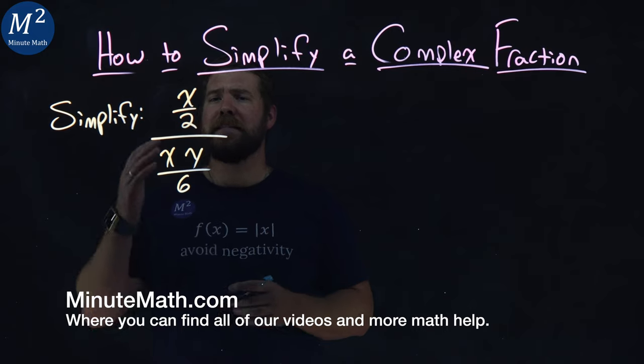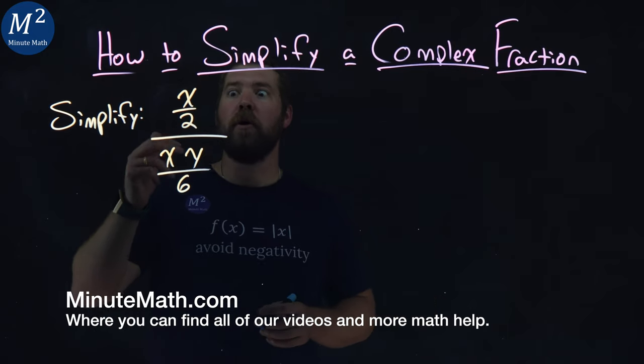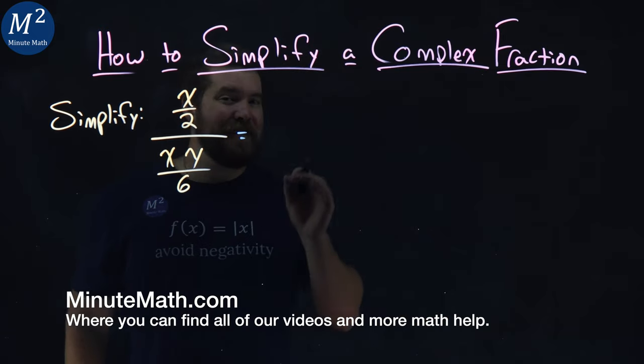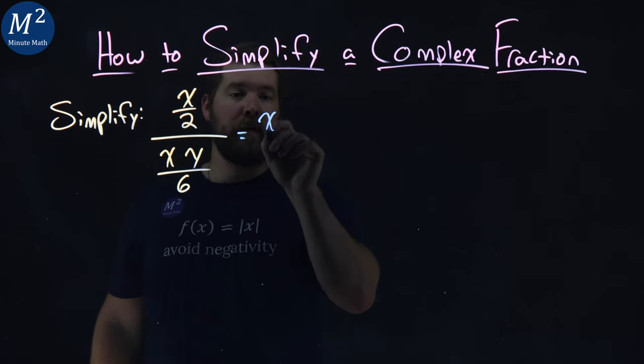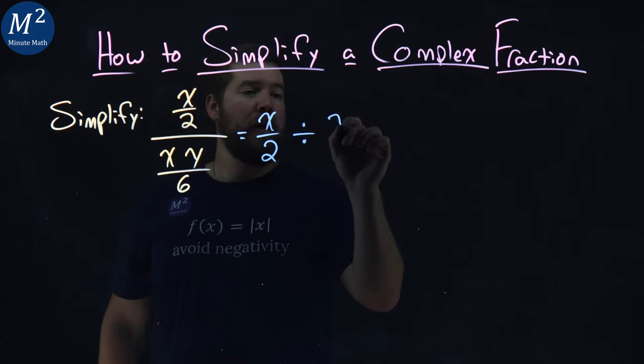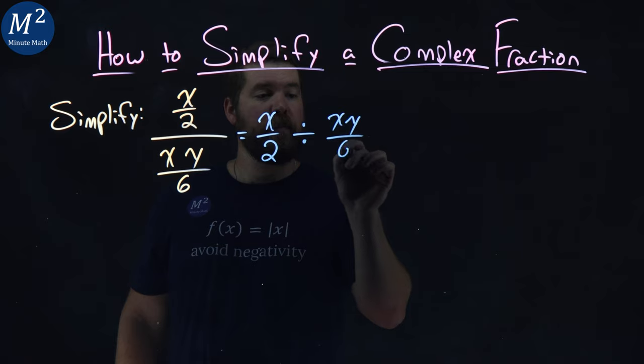We're given this problem here. We have to simplify x over 2 over xy over 6. This is a little difficult, but we can rewrite it to something more manageable: x over 2, instead of in a fraction form, divided by xy over 6.